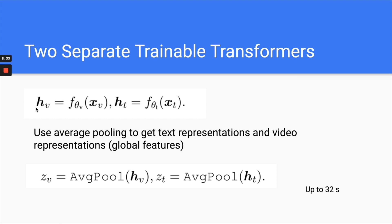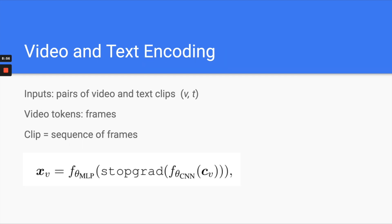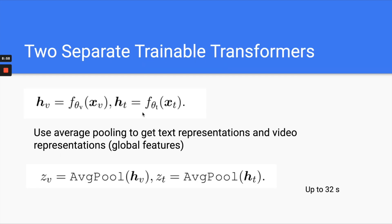One important thing to know is that they have two separate trainable transformers — one for video and one for text. The CNN is just used to get the visual features, and then you feed those features into your transformer. Same thing for text: the features go into the text transformer.